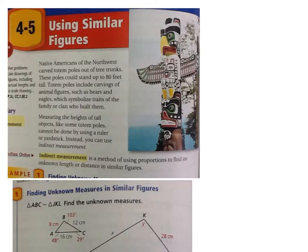and eagles which symbolize traits of the family or the clan who built them. Now, measuring the heights of tall objects like some totem poles cannot be done by using a ruler or a yardstick because you're not going to shimmy up the pole and measure it. You can use indirect measurement to measure how tall something is by using proportions of known lengths to find an unknown length. I'll show you what this means.